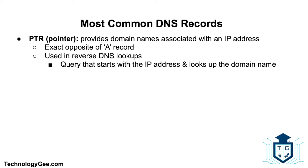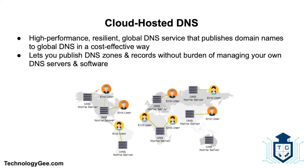The PTR record, or pointer record, provides the domain name associated with an IP address — the exact opposite of the A record. Pointer records are used in reverse DNS lookups. When a user types a domain name in the browser, a DNS lookup matches the domain name to its IP address. A reverse DNS lookup is the opposite: it starts with the IP address and looks up the domain name.